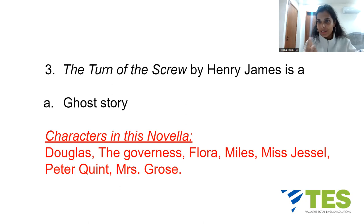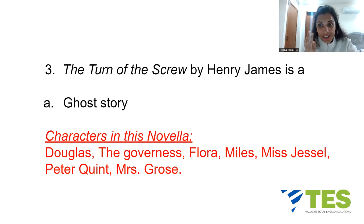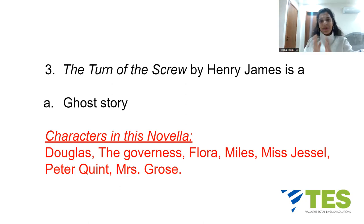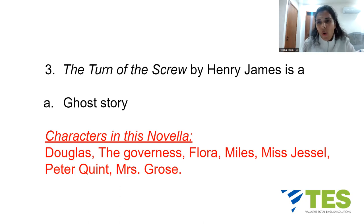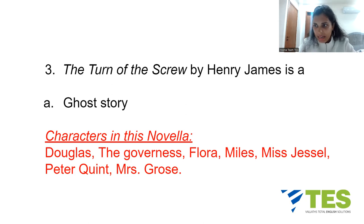One of the guests is Douglas, the second narrator, who tells the story of a governess who cares for two children, Flora and Miles. This brings us to the third narrator, the governess herself, who continues the novella from her perspective. The governess is employed by Flora and Miles's uncle to care for the children at a country house in Bly. Flora is a young orphan girl who was previously cared for by another governess named Miss Jessel, who is now dead.